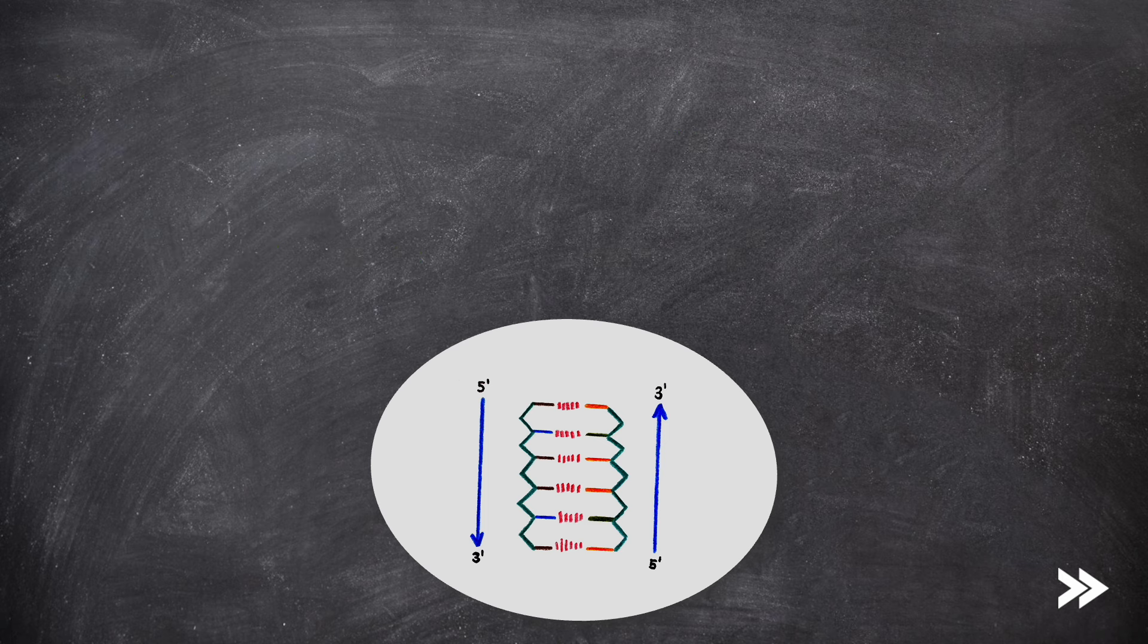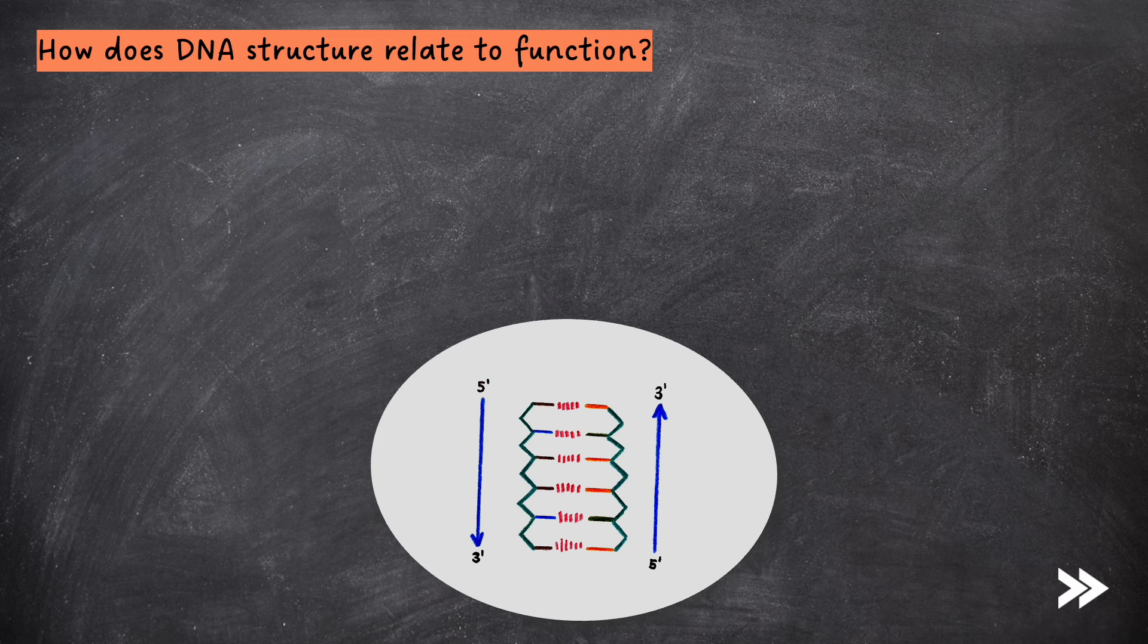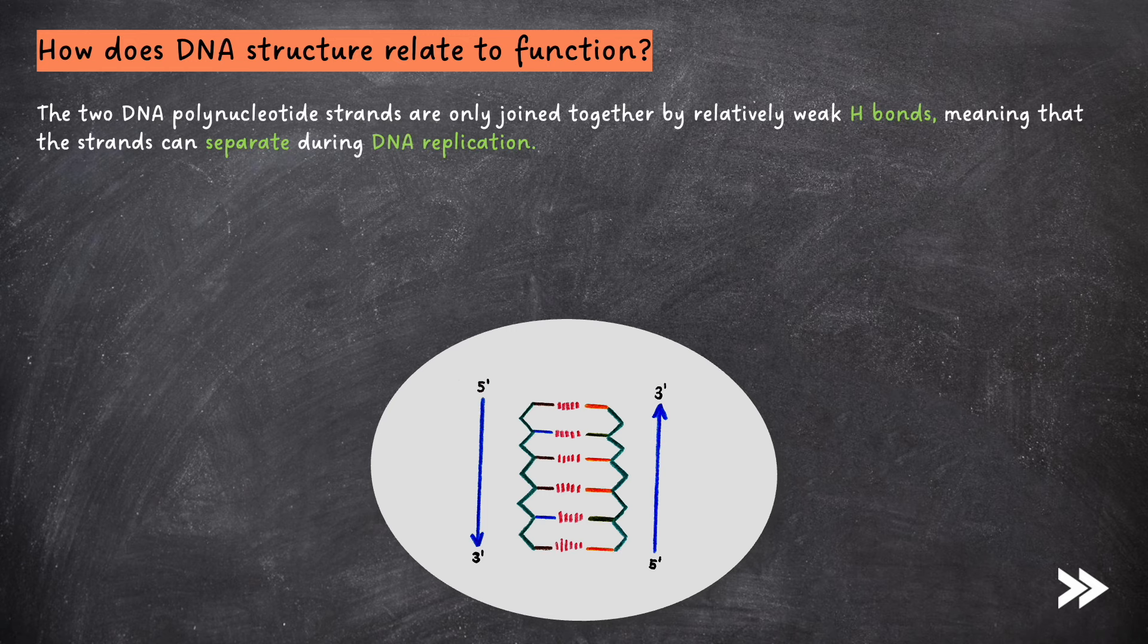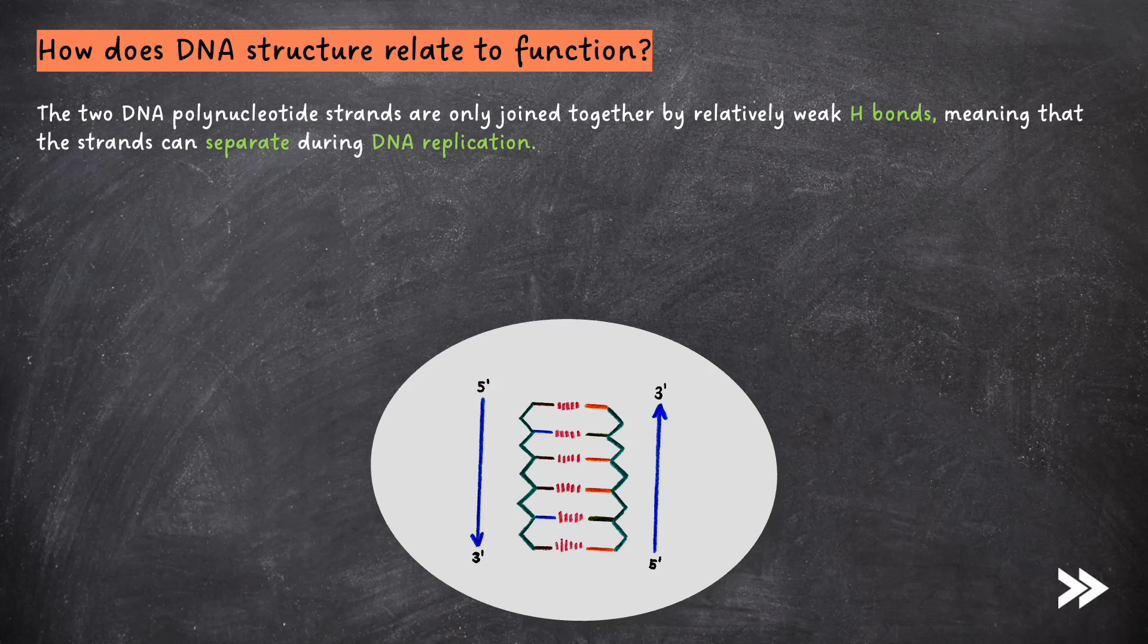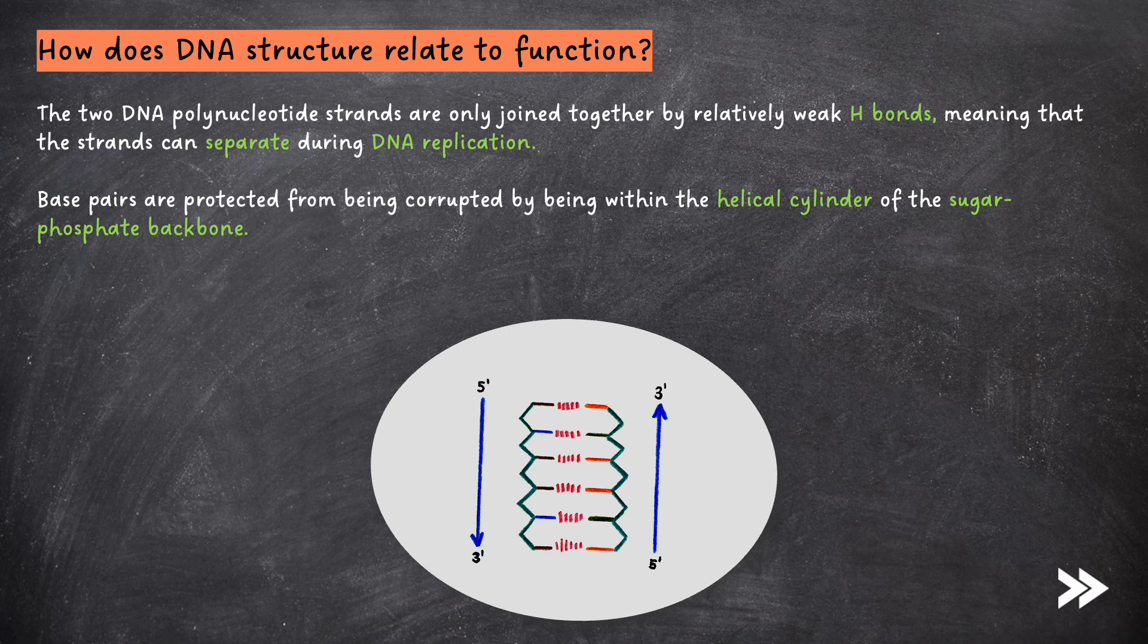So, how does DNA structure relate to function? The two DNA polynucleotide strands are only joined together by relatively weak hydrogen bonds, meaning that the strands can separate during DNA replication. The base pairs are protected from being corrupted by being within the helical cylinder of the sugar phosphate backbone. Finally, DNA is a very large molecule, so can carry lots of genetic information.